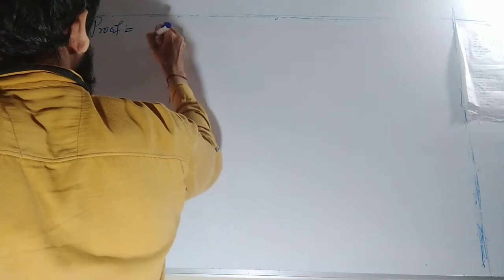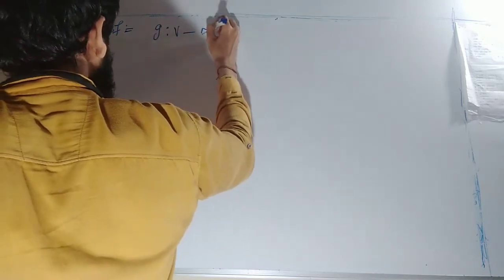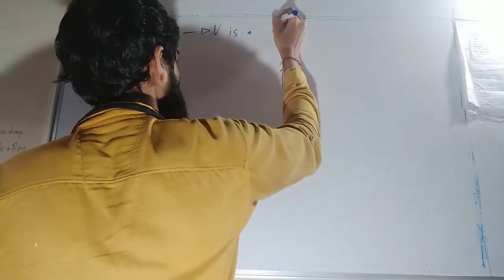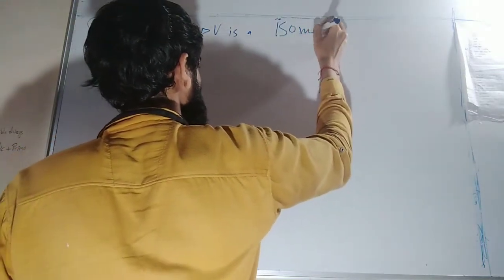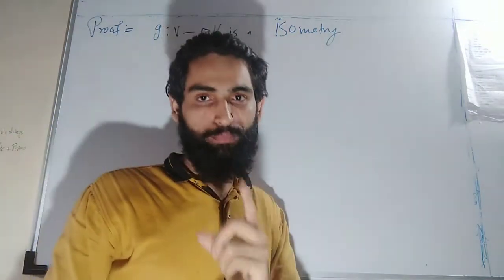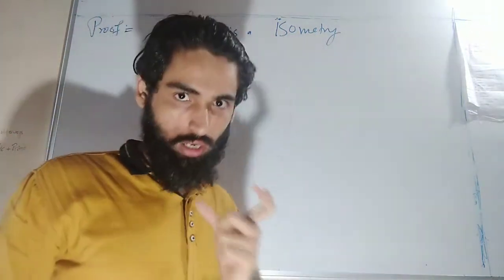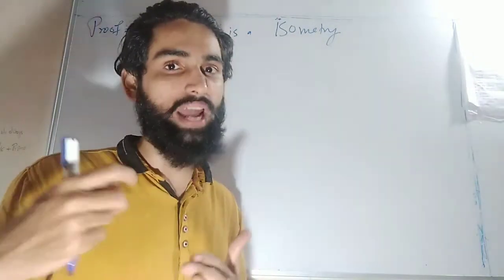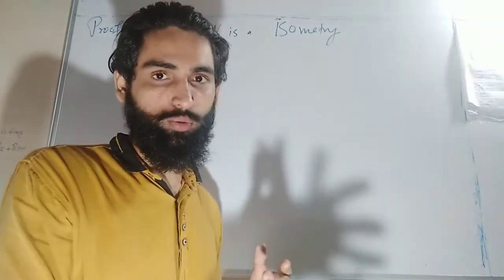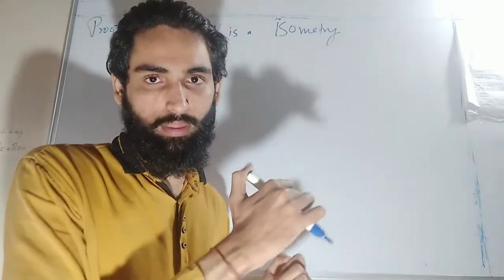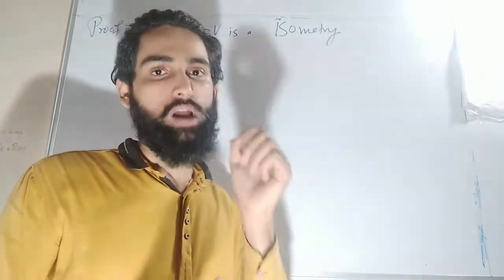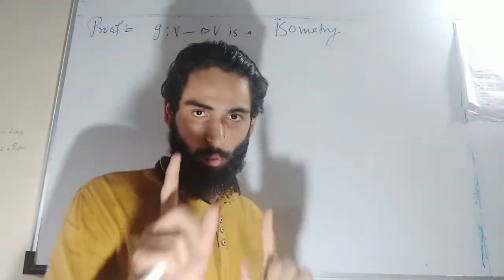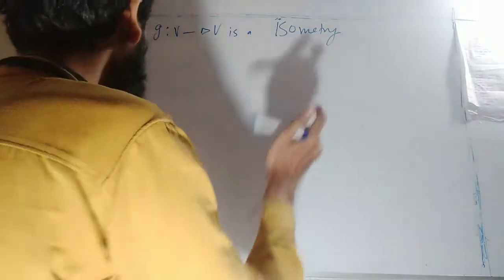So we are given g from V to V as an isometry, and we want to prove that g is nothing but the composition of an orthogonal transformation and a translation. We already have a relation between isometry and orthogonal transformation from our last theorem, which states that an isometry preserving the origin is an orthogonal transformation. We are going to use that theorem here.